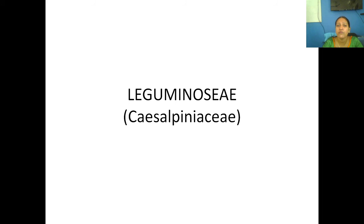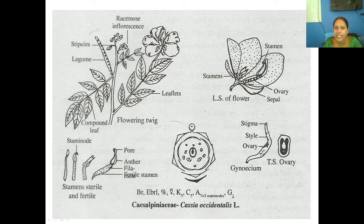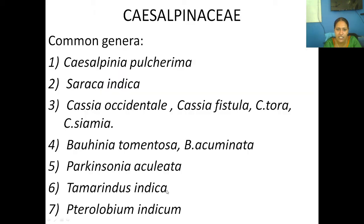This is the LS of the flower with the floral diagram, and this is the gynoecium — the ovary and the stamens. The common plants in Caesalpinioideae include Caesalpinia pulcherrima (known as Rajamani), Saraca indica (the Ashoka tree), Cassia species, Bauhinia, and Tamarindus indica, known as Kuli malala in Malayalam.